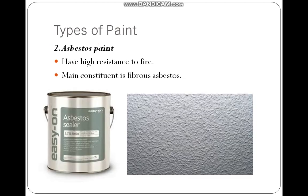Next is asbestos paint. Asbestos has very high heat resistance to fire. Its main constituent is fibrous asbestos. You can see the corrugations here — this is one of the products that uses asbestos paint.